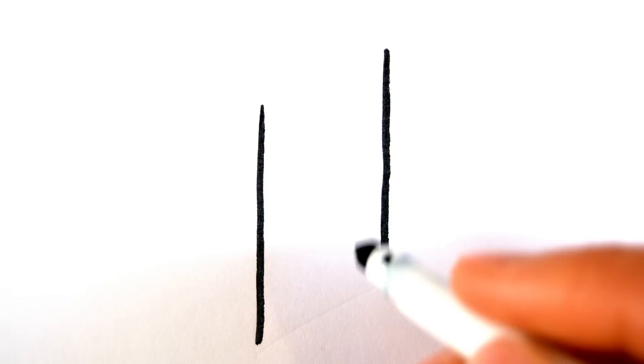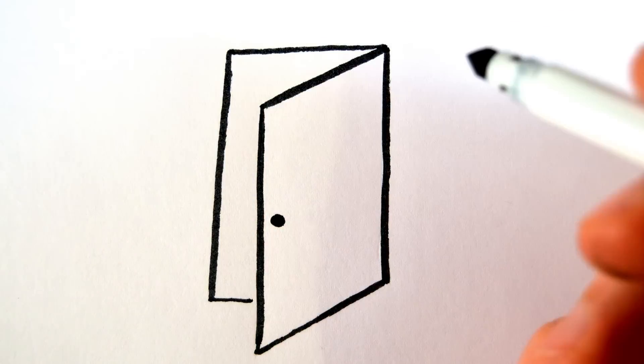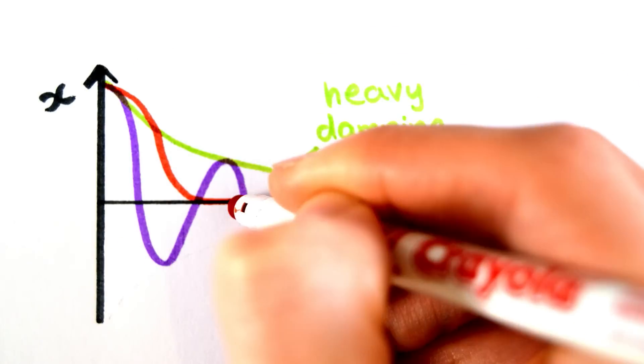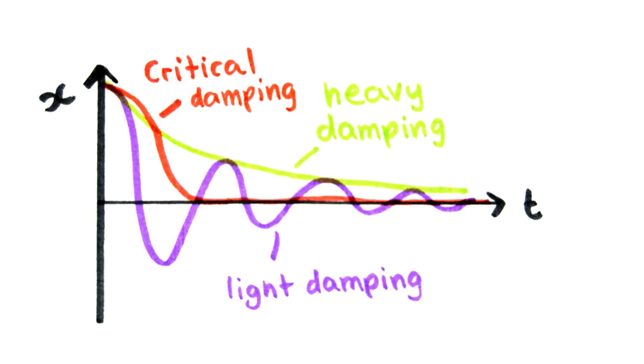Heavy damping is useful for preventing doors slamming shut because it smooths out the oscillations to rest. Critical damping is the quickest time the oscillating body can be brought to rest.